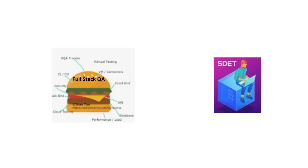Full stack QA is about the T-shaped skill set. You will be strong in performance testing; your core will still be performance testing only. But how can you expand yourself horizontally with other testing aspects — be it automation testing, security testing, or some other flavor of testing?